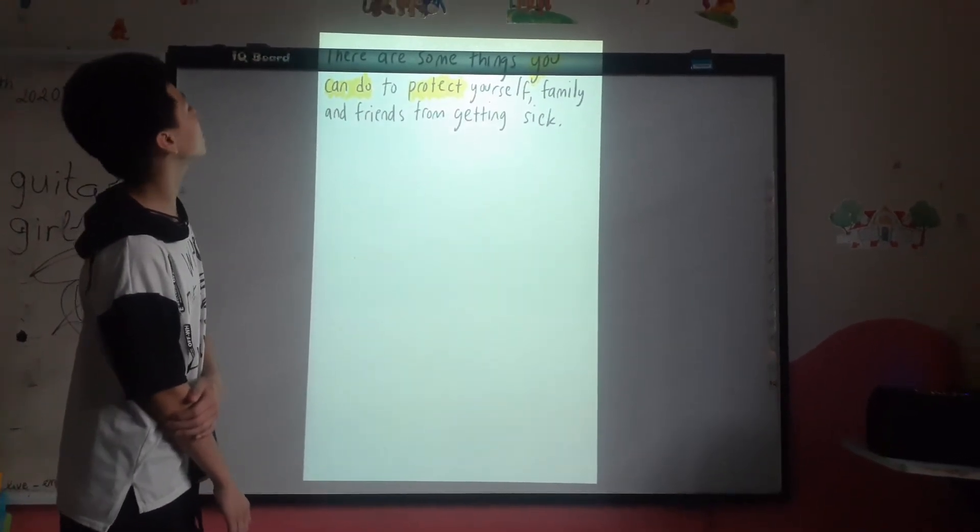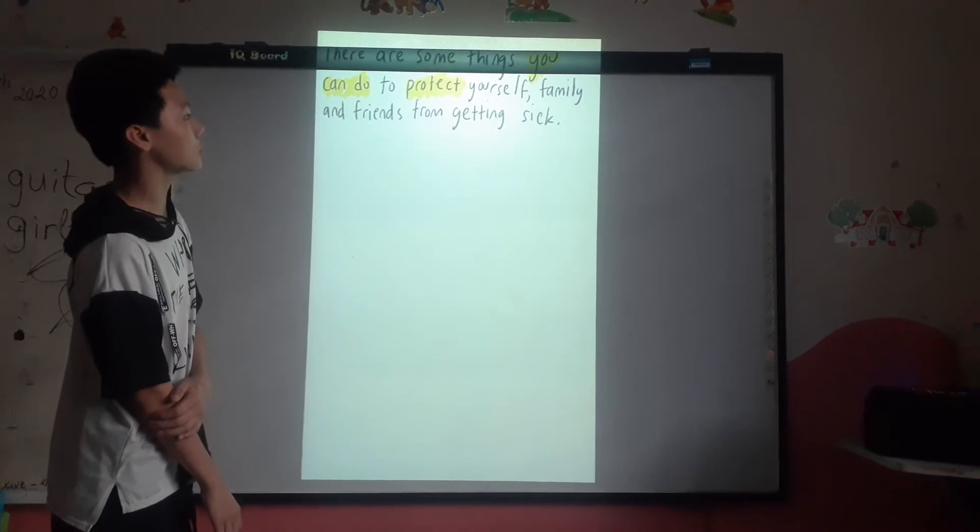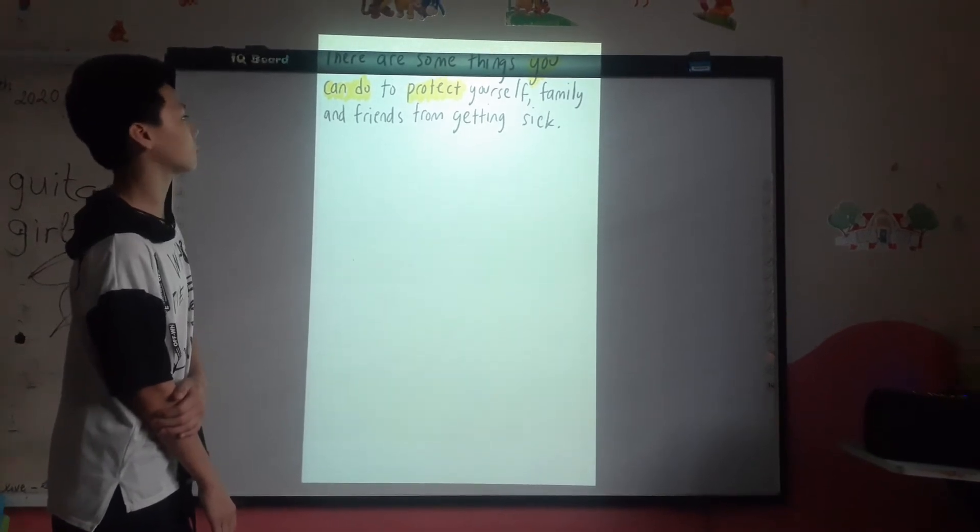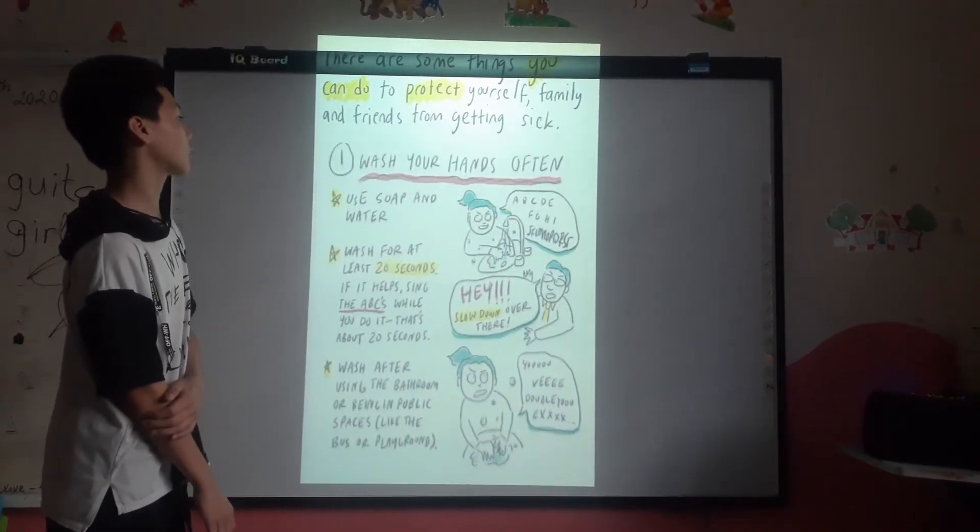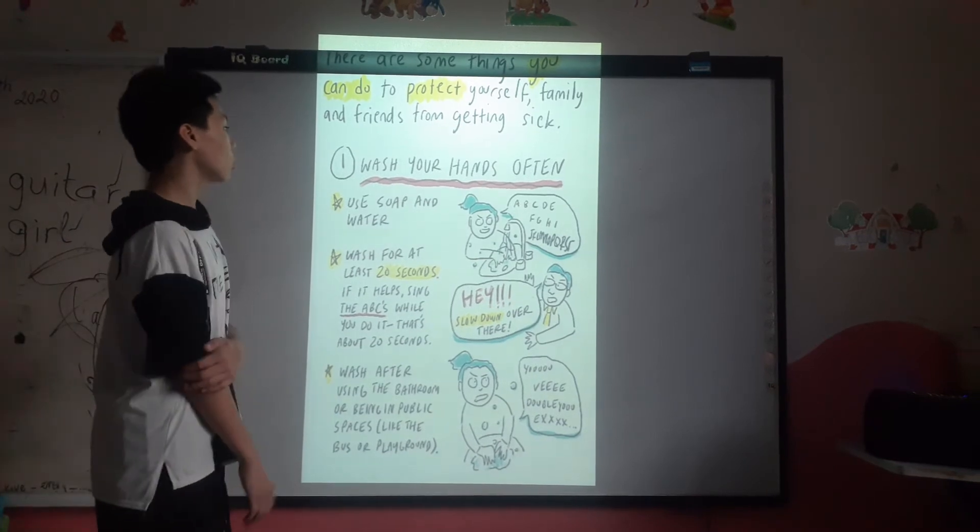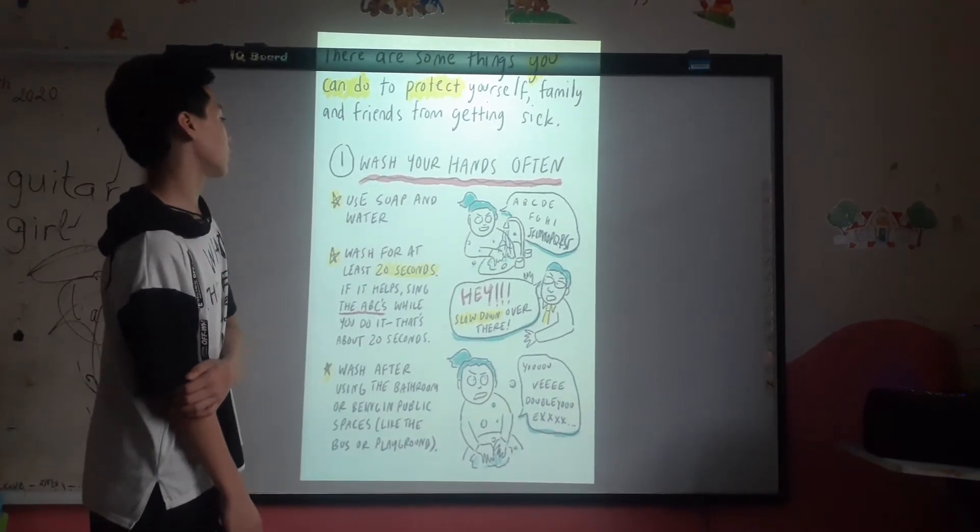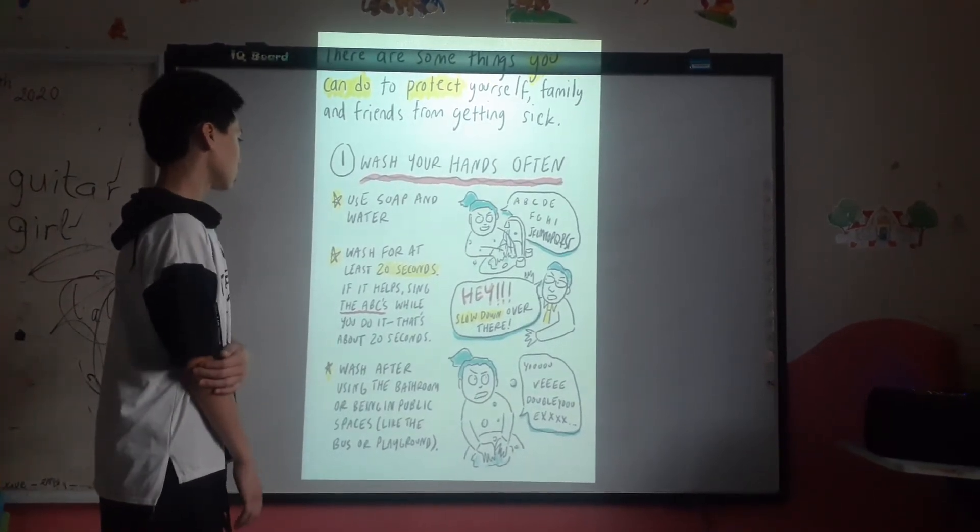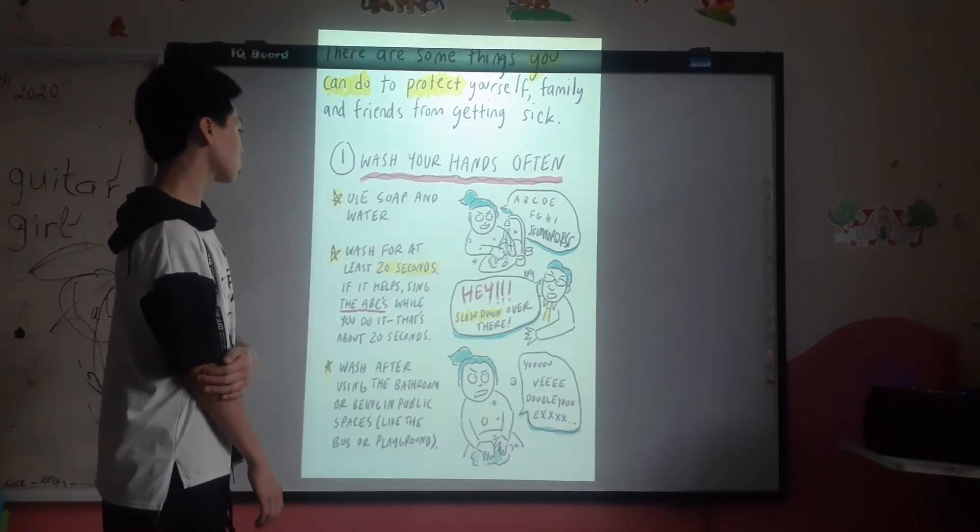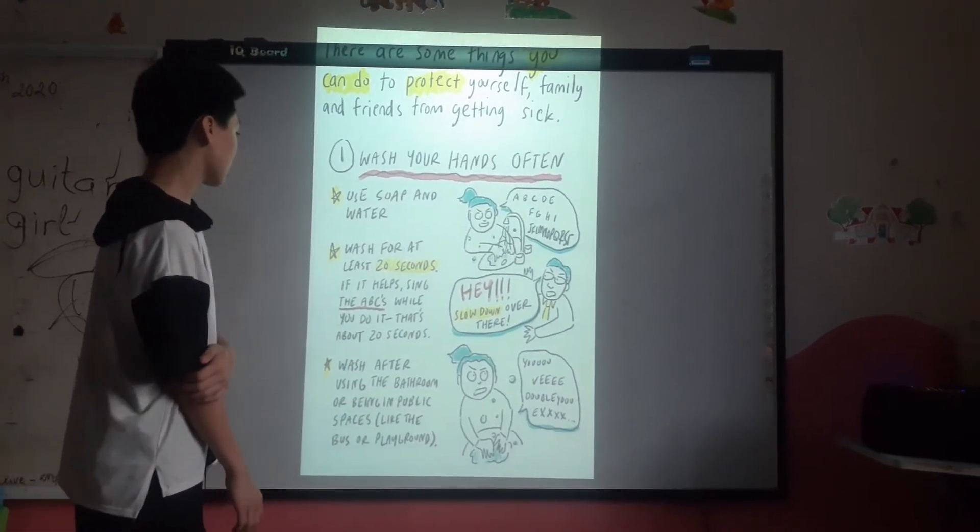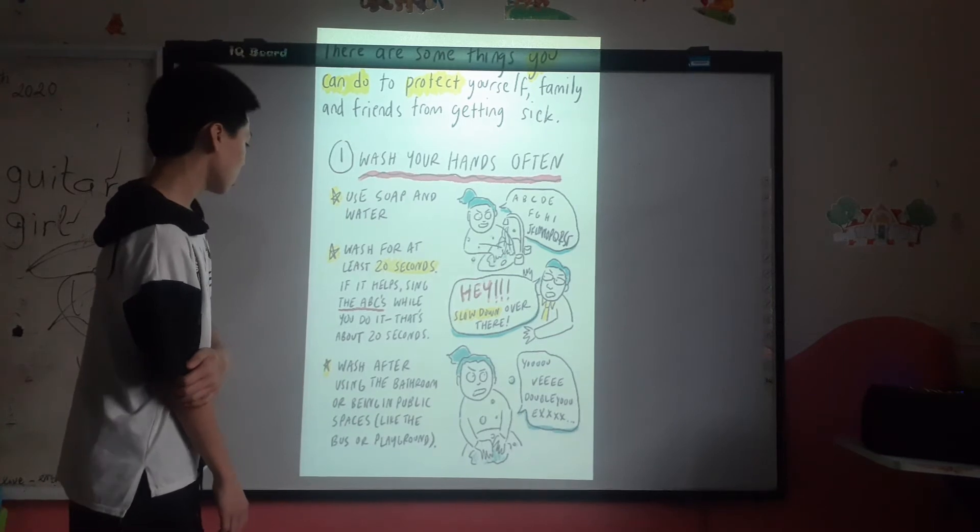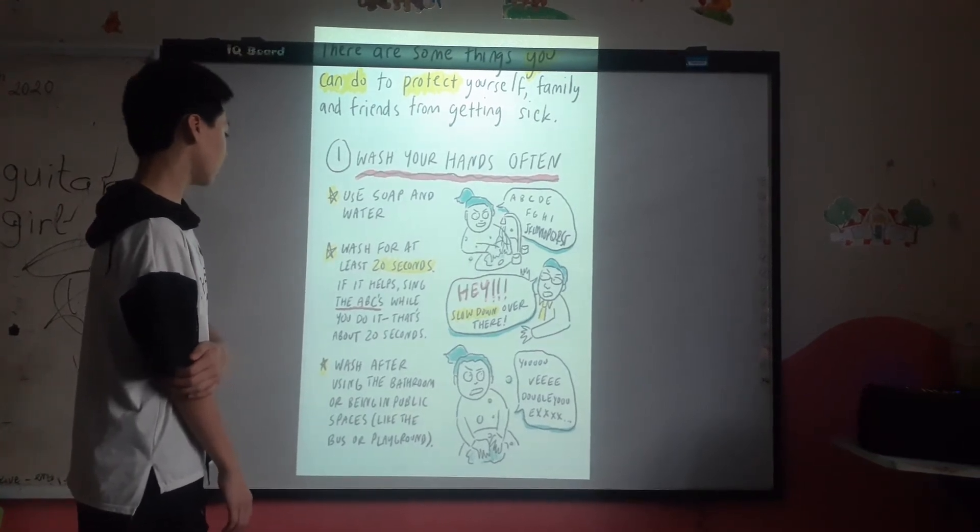There are some things you can do to protect yourself, family, and friends from getting sick. Here are a lot of tips. One: wash your hands often. First, use soap and water. Second, wash for at least 20 seconds. If it counts, sing the ABCs when you do it, just about 20 seconds.